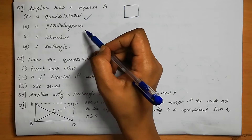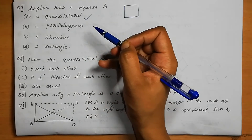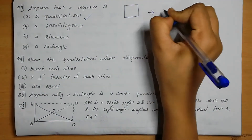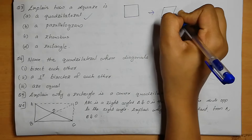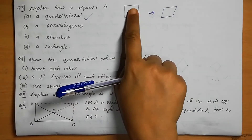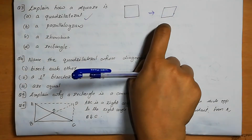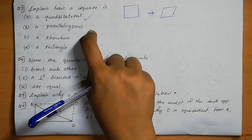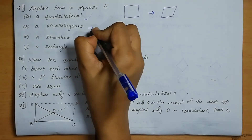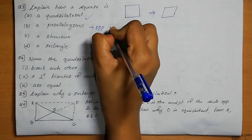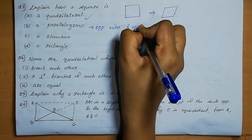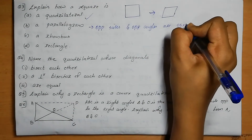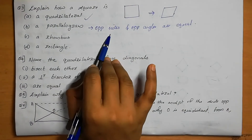A square is a parallelogram. Why? Because opposite sides are equal and opposite angles are equal. Because of these two cases, we can say that a square is a parallelogram.